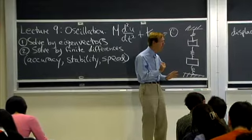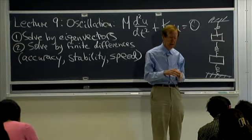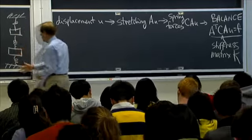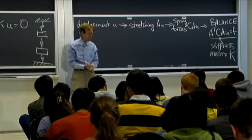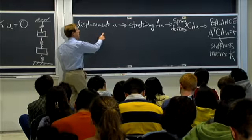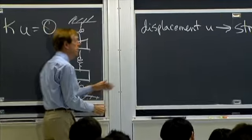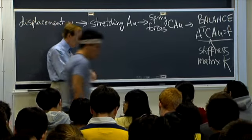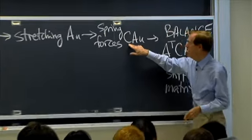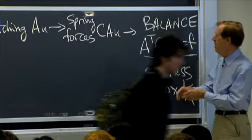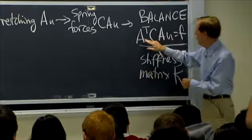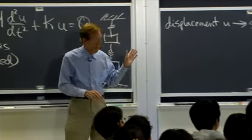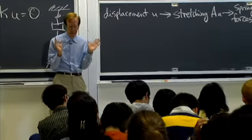Let me recap the important lecture from last time that gave the framework we'll see in chapters two and three — really a major part of the course. Our example was a line of masses and springs. There were three steps: difference in displacements gave the stretching of the springs; then comes Hooke's law with matrix C leading to CAu; and finally those spring forces are balanced by external forces, bringing in A transpose.